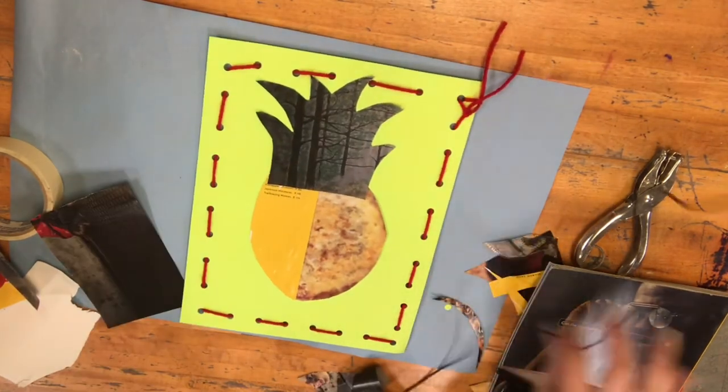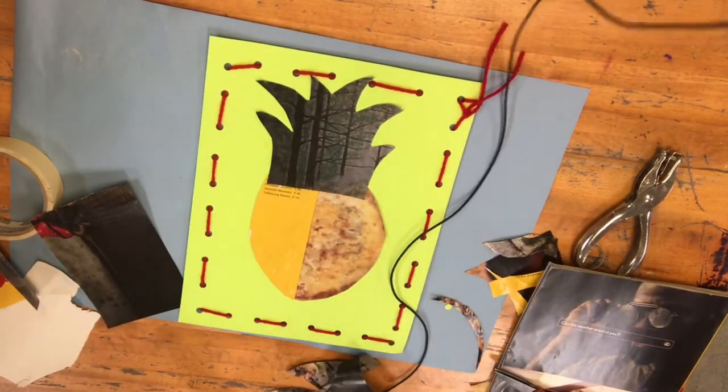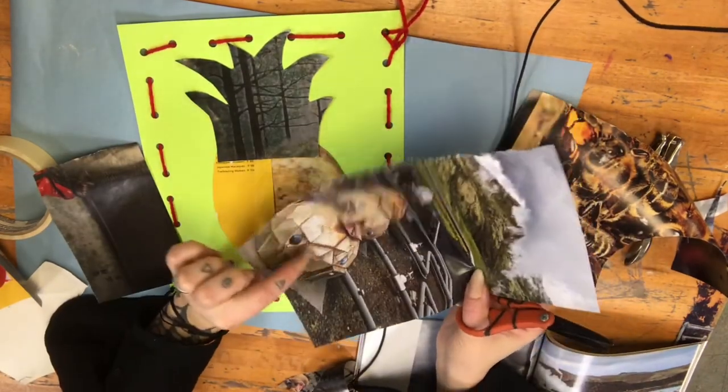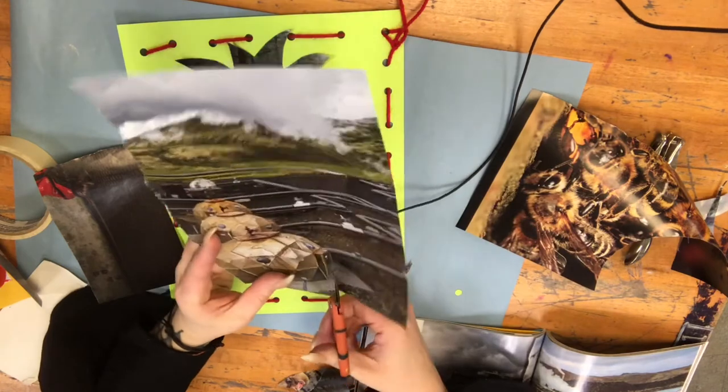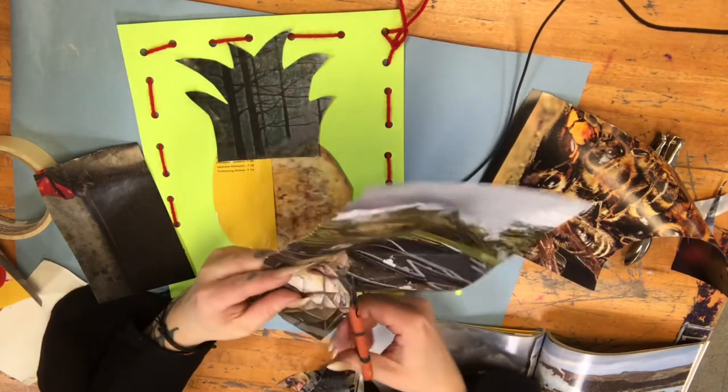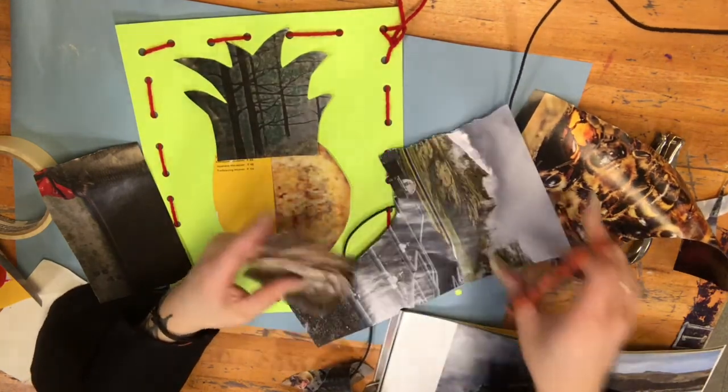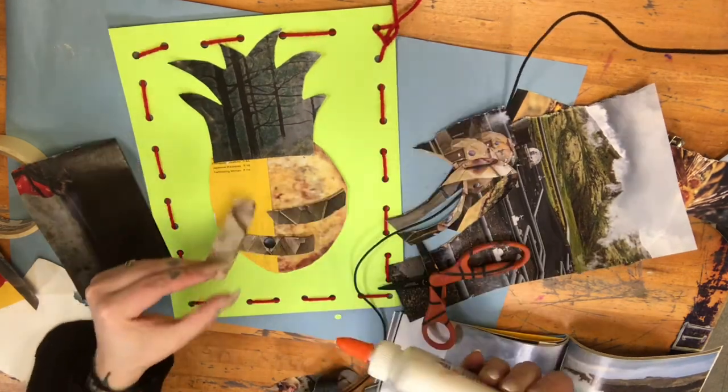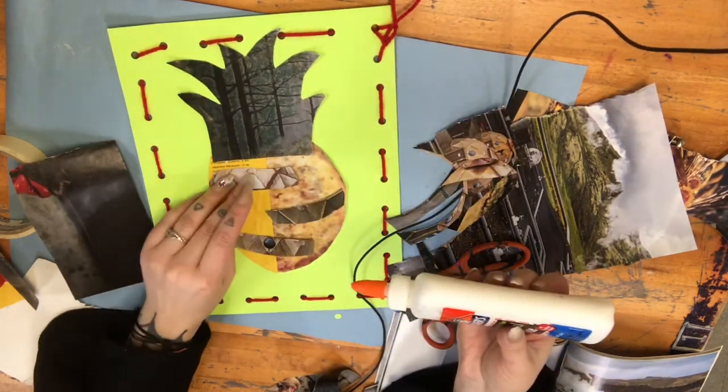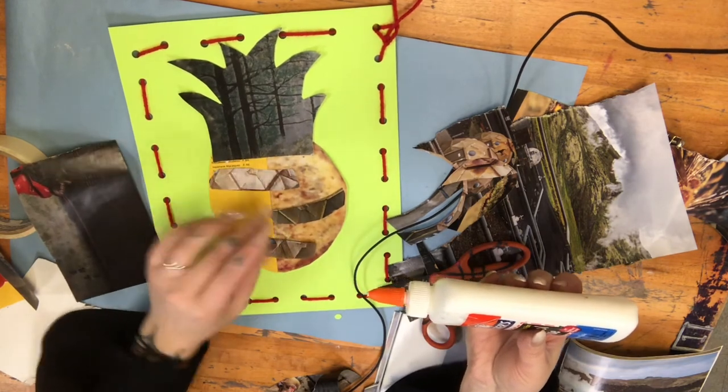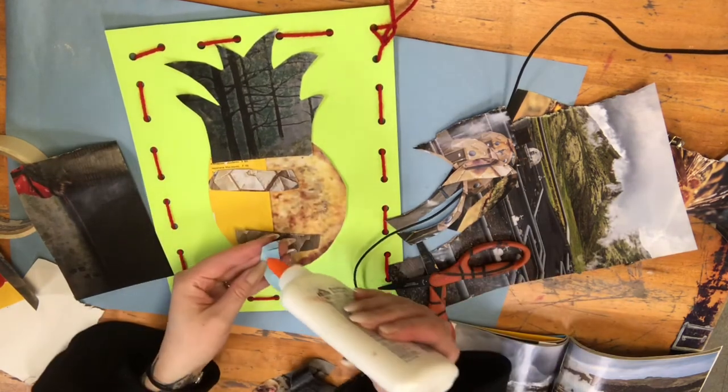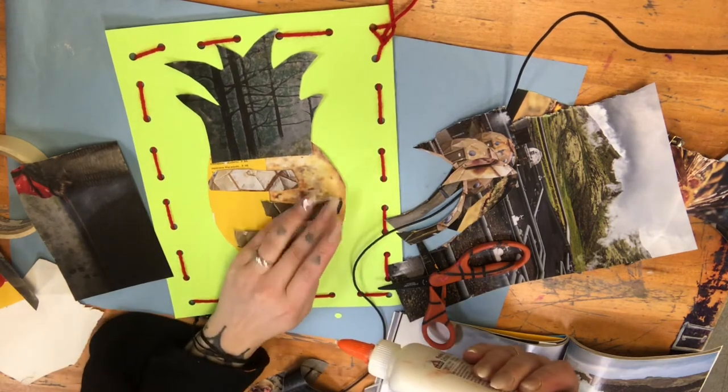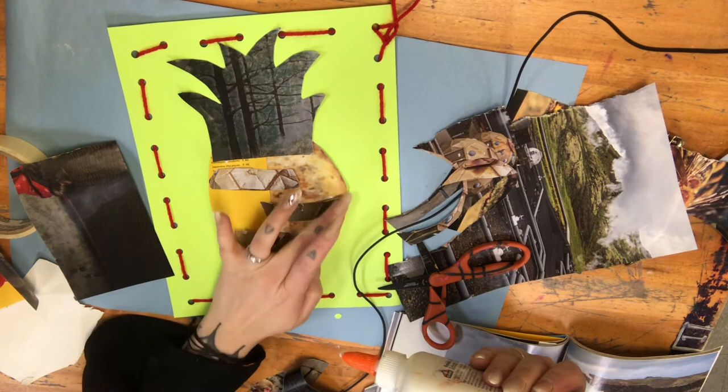I think I want my pineapple to have some texture to make it look bumpy. And in my magazine, I found this interesting texture. I think I'm going to try and use this for my pineapple texture. And I want you to notice that I didn't just glue one piece of paper for each part. I am layering my pieces on top of each other. That is what is going to make your collage more interesting.